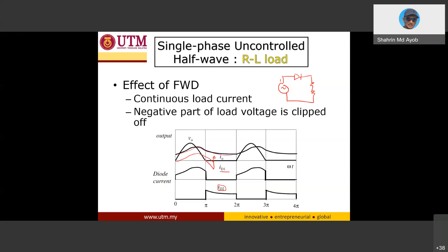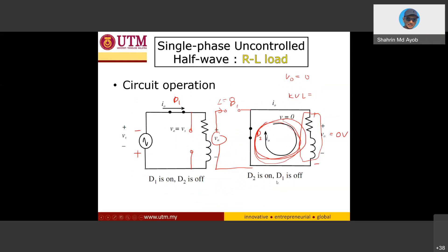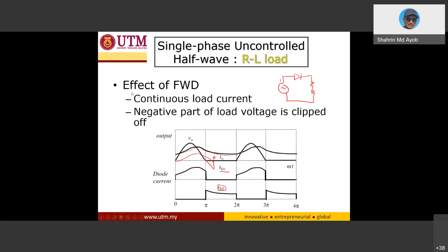There are two advantages of using the freewheeling diode in parallel with the load. First, the load current becomes continuous. Second, the output voltage has no negative portion, so the average output voltage V_average is higher than in the original circuit, because the negative area that previously reduced the average is eliminated.